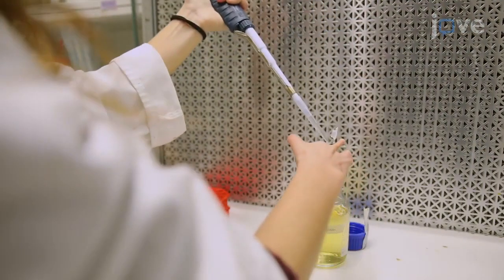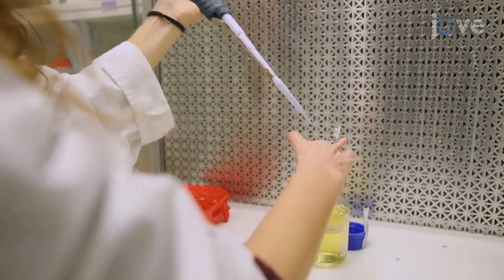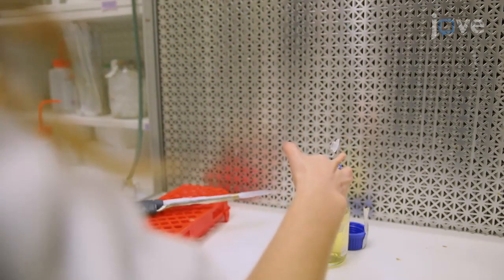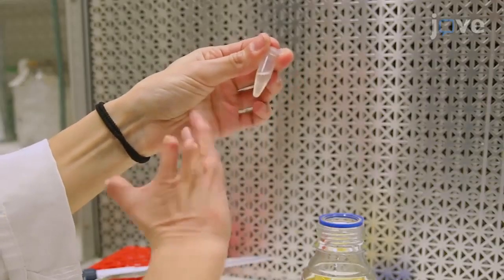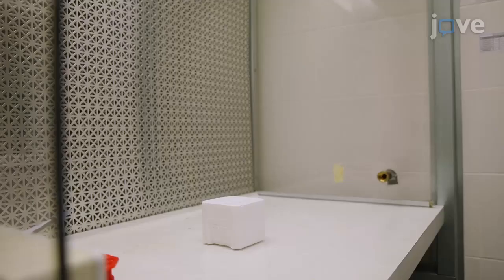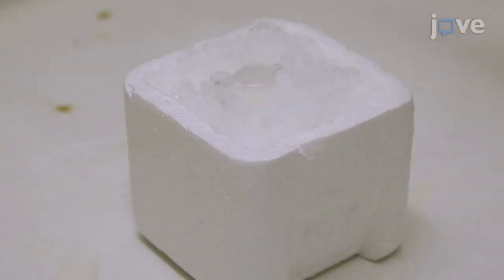After the second wash, resuspend the pellet to the appropriate concentration to obtain a final OD600 of 0.8 and place the bacterial cells on ice.